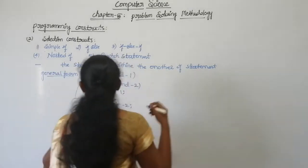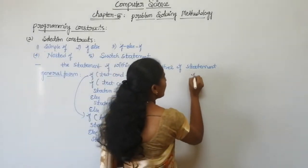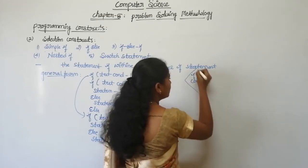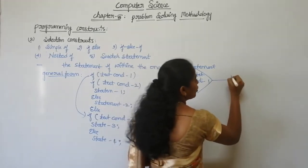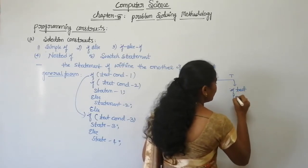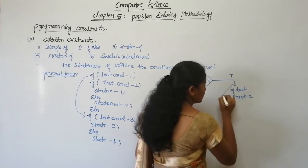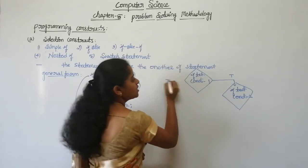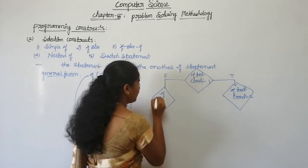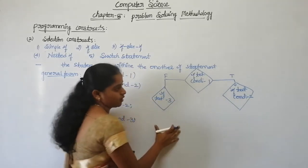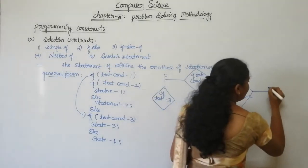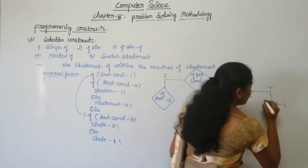The flowchart for this nested if statement is shown here. First, test condition one is evaluated. If it is true, then test condition two is evaluated. If test condition two is true, then statement one executes.